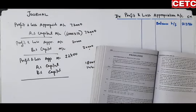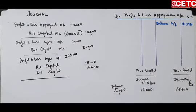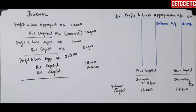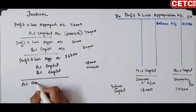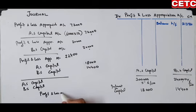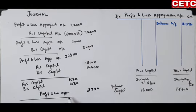Interest on drawings jo hai, yeh business ki income hai aur partners ka yeh kharcha hai. Interest on capital partners ki income hai, interest on drawings business ki income hai. Ab is situation mein partners ke capital accounts debit ho jaayenge aur Profit and Loss Appropriation credit. To likhenge: A's Capital debit 1,620, B's Capital debit 1,080 — Profit and Loss Appropriation Account credit.